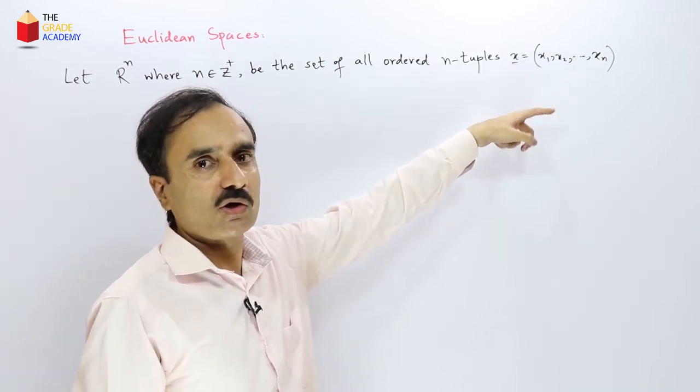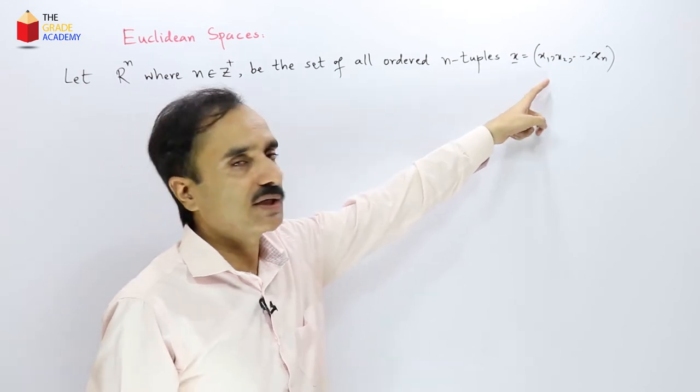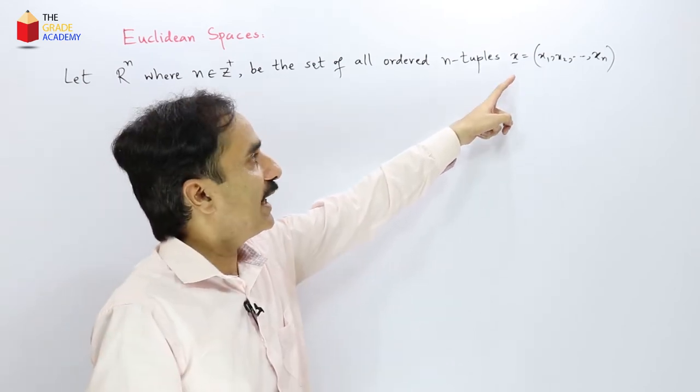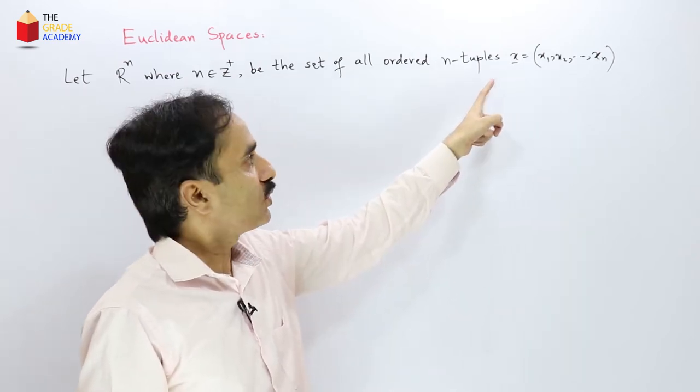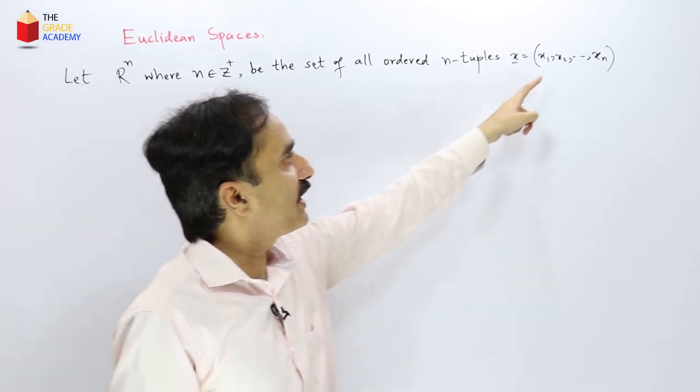So in two dimension it is an ordered pair and in three dimension it is an ordered triple and so on. In n dimension it is an ordered n-tuple. So the set consisting of all ordered n-tuples.